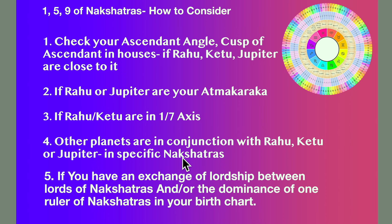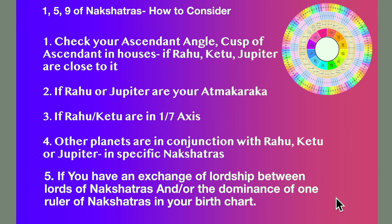We'll deal with all nine types of nakshatras here. Rule Number 5, and the most important: if you have an exchange of lordship between the lords of nakshatras, and/or the dominance of one ruler of nakshatras in your chart. For example, if you have Mercury and Moon exchanging lords, and then Mercury-dominated nakshatras, this will be important — especially if Jupiter is in that particular nakshatra of Mercury. You've got to check which the ruler of the nakshatra is. We have nine classifications of three nakshatras each, making 27. Let's get into it.